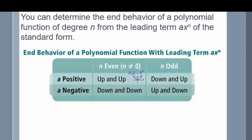If my coefficient is positive and my exponent is odd, then my graph starts down and ends up. An example of a positive coefficient and an odd exponent is a linear function where f of x is equal to x. Here my coefficient is 1 and my exponent is 1 — it starts down and moves up.